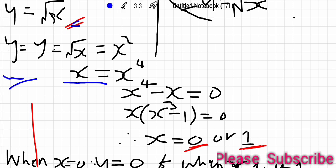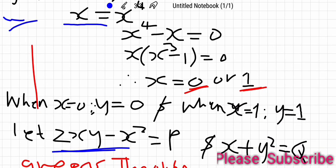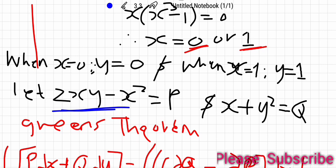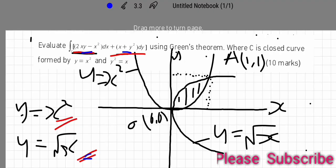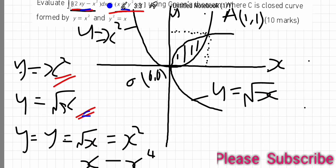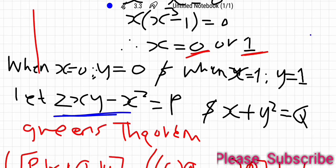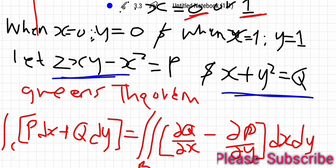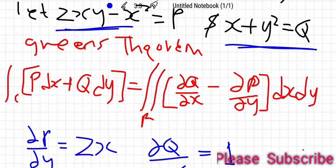The second step is to find the values of y when x is 0 and when x is 1, giving y equals 0 and y equals 1. We let P equal 2xy minus x squared and Q equal x plus y squared from the original equation, then apply Green's theorem: the integral of PDX plus QDY equals the double integral of the partial derivative of Q with respect to x minus the partial derivative of P with respect to y, dx dy.